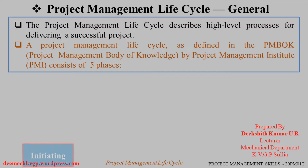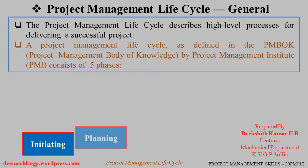Number 1 is Initiation. In this phase, a project management organization will develop a business case, identify the scope, and will identify project stakeholders such as investors, team members, suppliers, customers, etc. Number 2 is Planning.